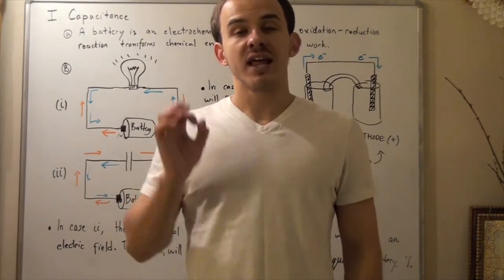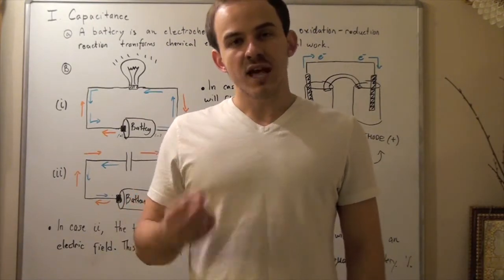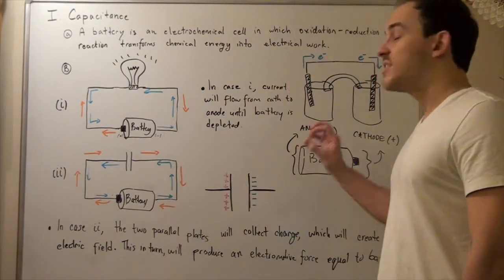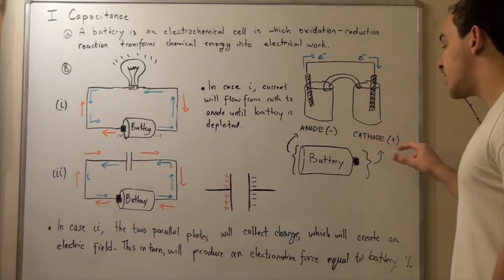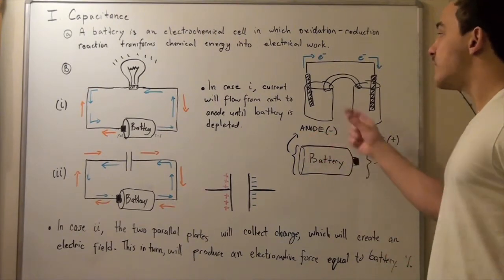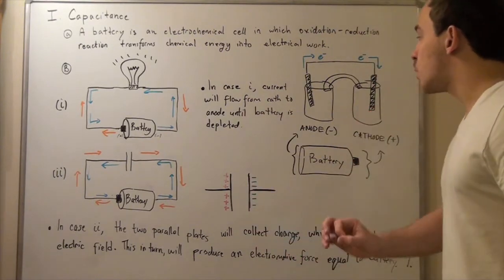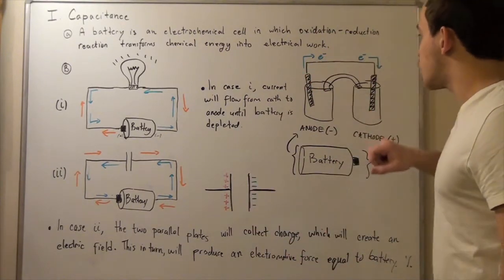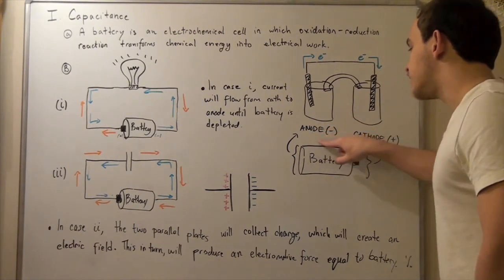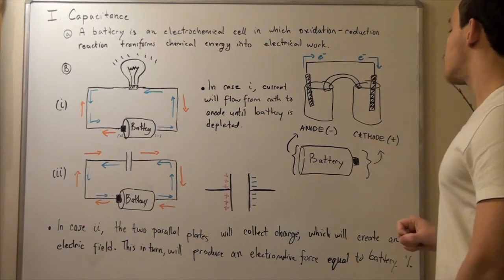Let's look at the layout of an electrochemical cell. Electrochemical cells are composed of two half cells: half cell number one, the anode, and half cell number two, the cathode. Within the anode, we have an electrode that loses electrons, and these electrons travel from the anode — the negatively charged half cell — to the cathode, the positively charged half cell.